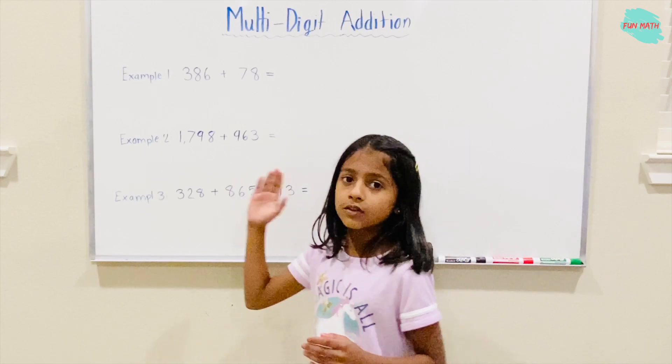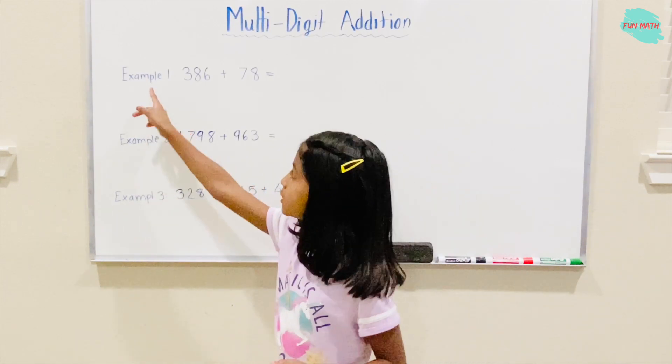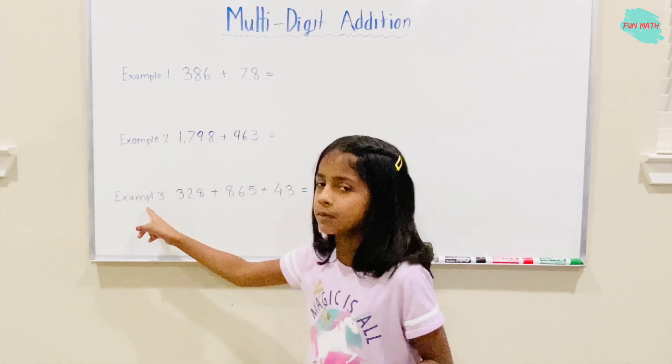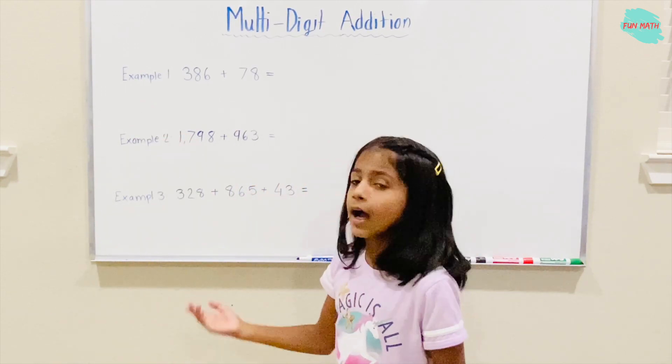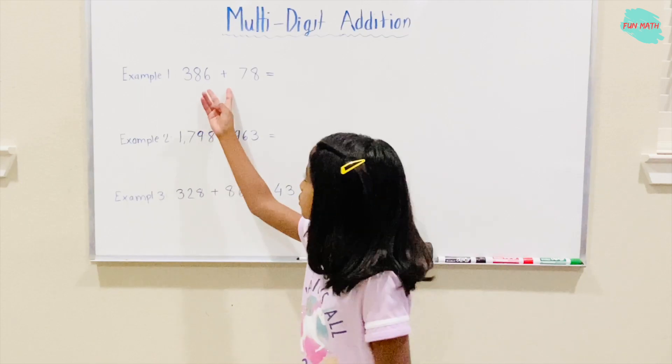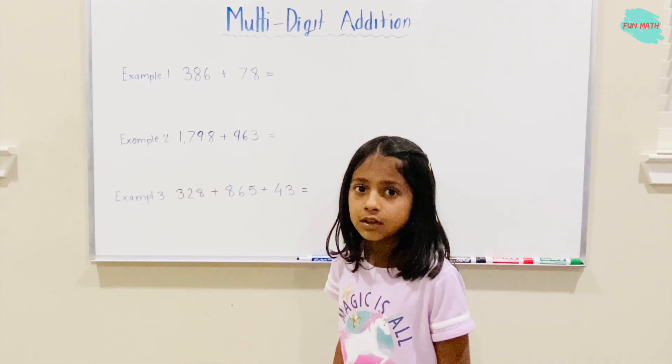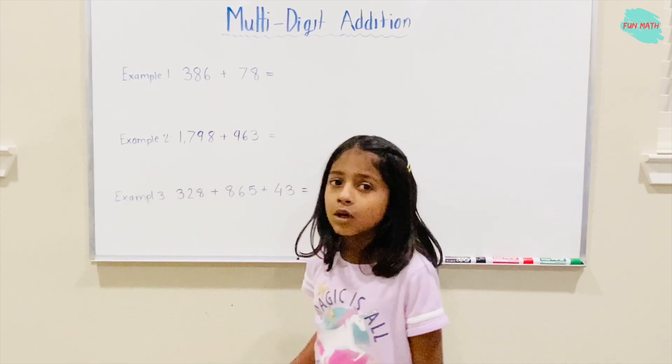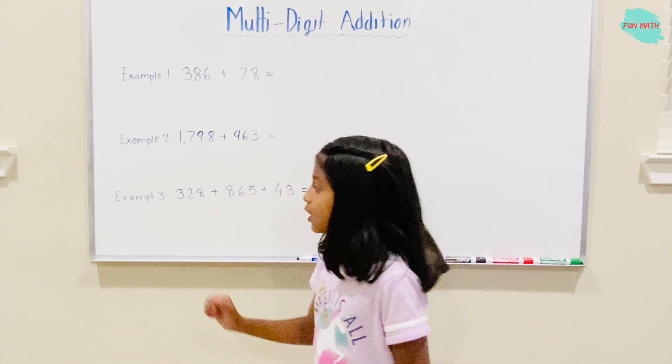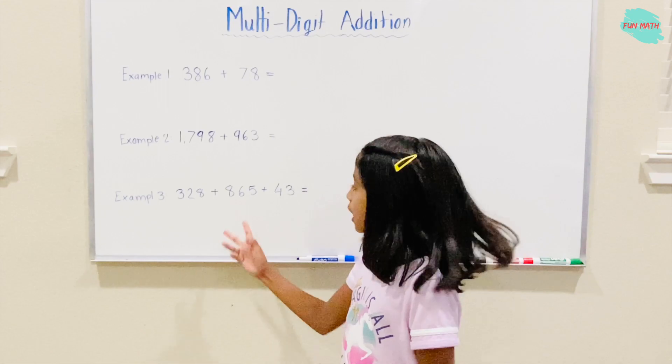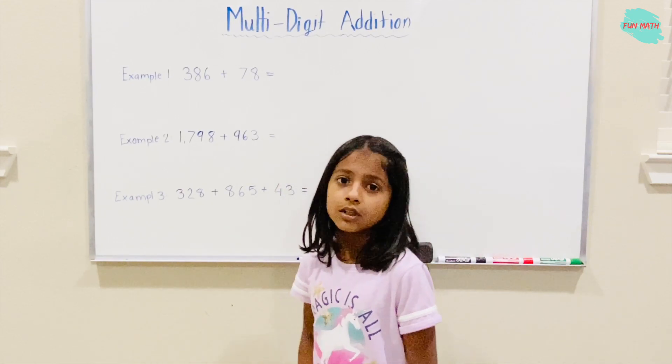Here we have three examples. Example 1, Example 2, and Example 3. In Example 1, we're just adding two multi-digit numbers together. In Example 2, we're just adding two multi-digit numbers too. And in Example 3, we're just adding three multi-digit numbers together.